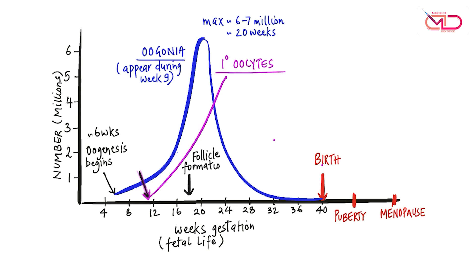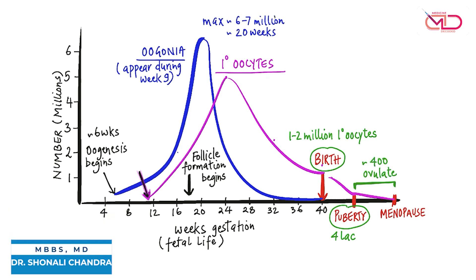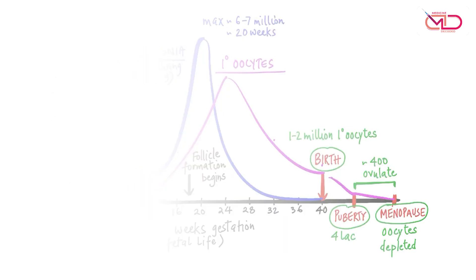Primary oocytes appear first at around 11 to 12 weeks of gestation. Follicle formation begins around 18 weeks of gestation, and primary oocytes not encased in follicles undergo atresia. At birth, only one to two million primary oocytes remain. Atresia continues and at puberty only 400,000 primary oocytes remain, with only about 400 ovulating during the entire reproductive lifespan. Ultimately, at the time of menopause, all oocytes and follicles are depleted; for each egg released each month, around 1,000 follicles die in the process.